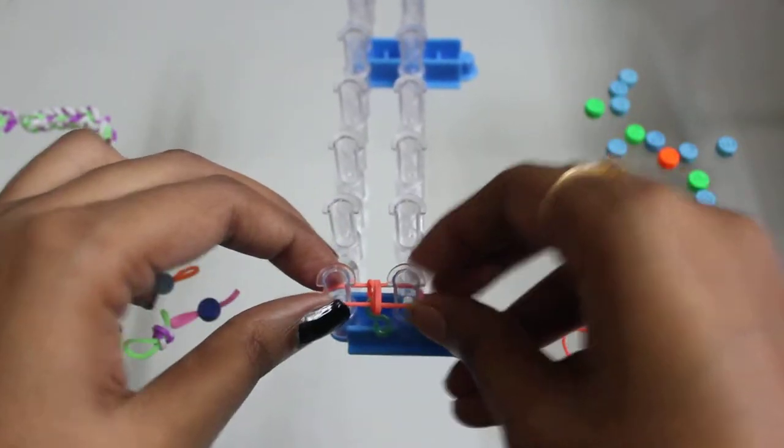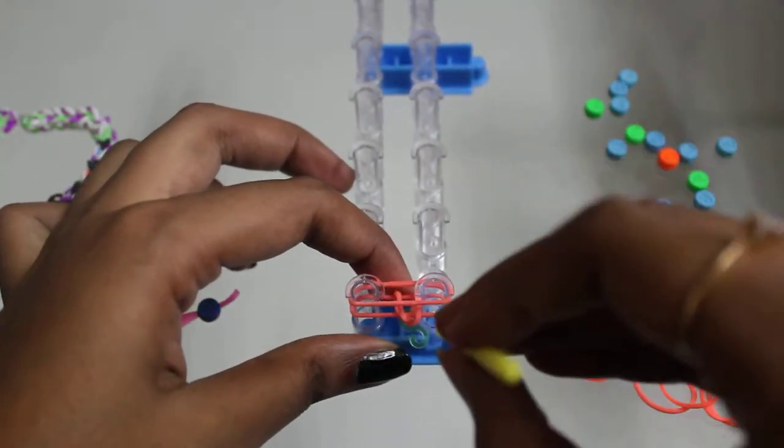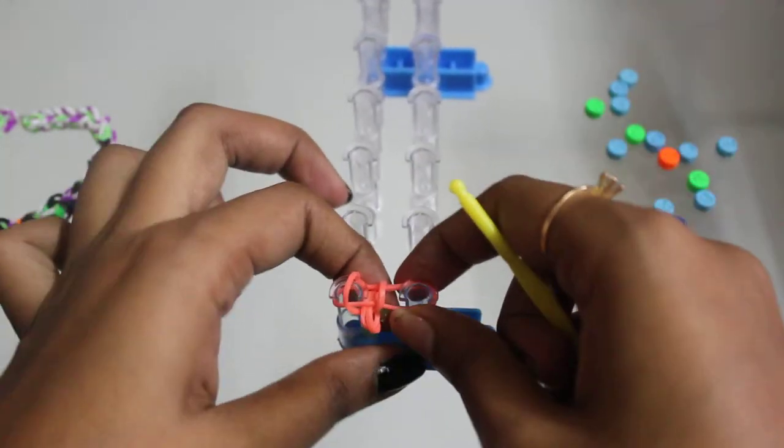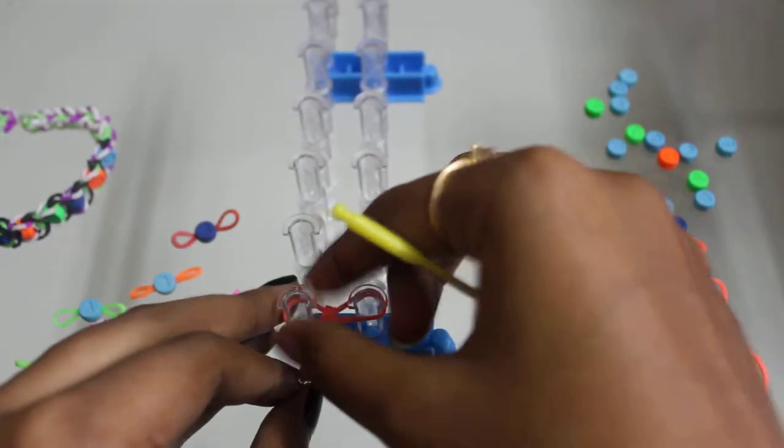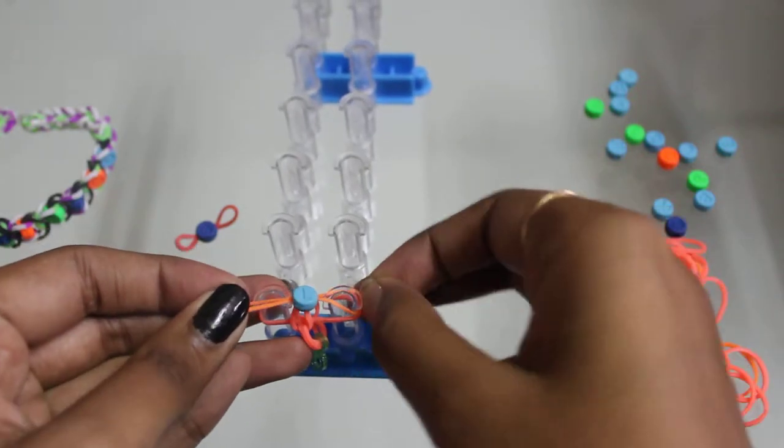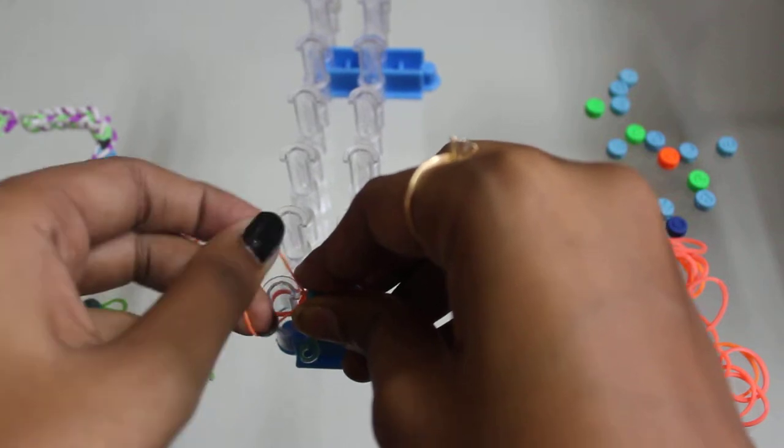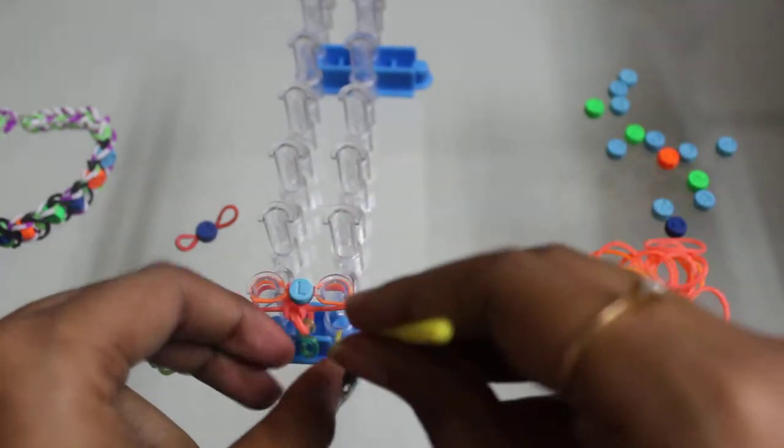Then take another rubber, place it like this. You can use any color schemes you want to make it more funky and attractive. Push it down, then take the beaded one and put it on both sides. Place it carefully so your beads won't get removed.